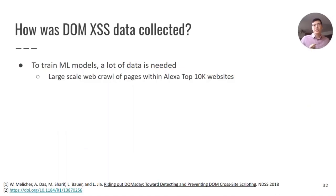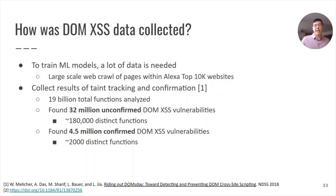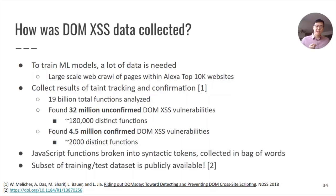To train these machine learning models, a large amount of data is needed. We performed a large-scale web crawl of pages contained within the Alexa Top 10,000 websites. We used a taint tracking-enabled browser to collect the results of taint tracking and proof-of-concept exploits. 19 billion total functions were analyzed, and 32 million unconfirmed DOMXSS vulnerabilities were found, and 4.5 million confirmed DOMXSS vulnerabilities were found. Many of these instances are duplicates, and when considering distinct functions, the counts are far lower. We additionally process these functions by breaking them down into their syntactic tokens and collecting those tokens in a bag-of-words representation. A subset of our training and test dataset is made publicly available.